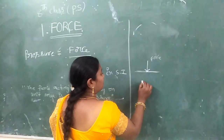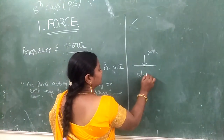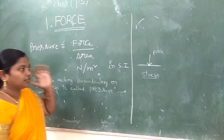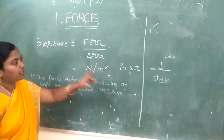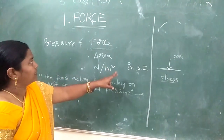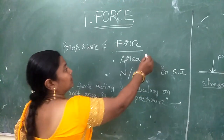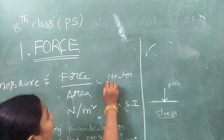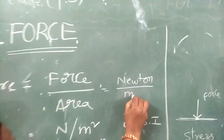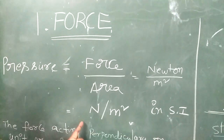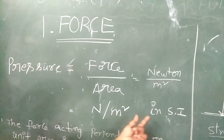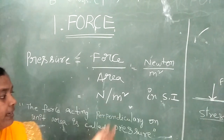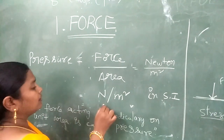This pressure is also called as Pascal. The SI units of pressure — we can measure force in newtons and area in meter squared — so the SI unit of pressure is newton per meter squared, also called Pascal.